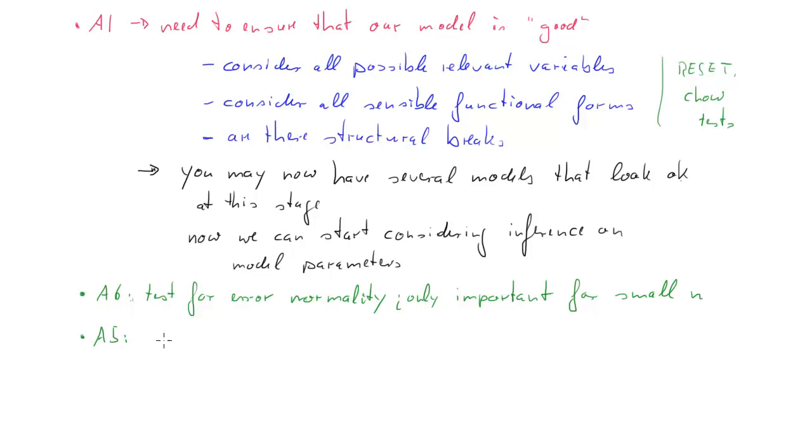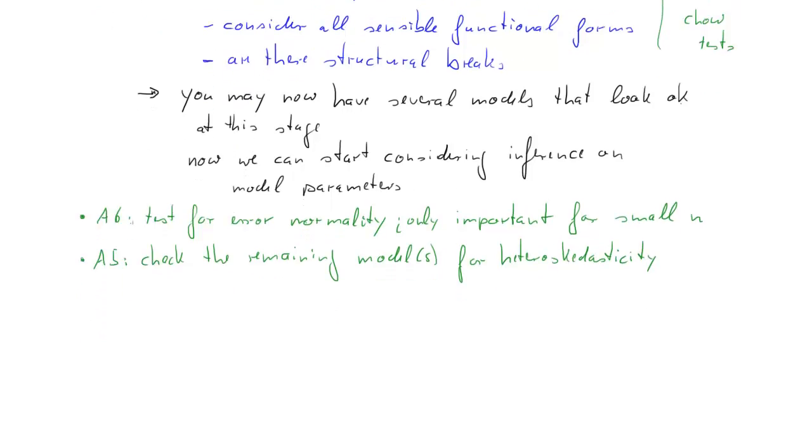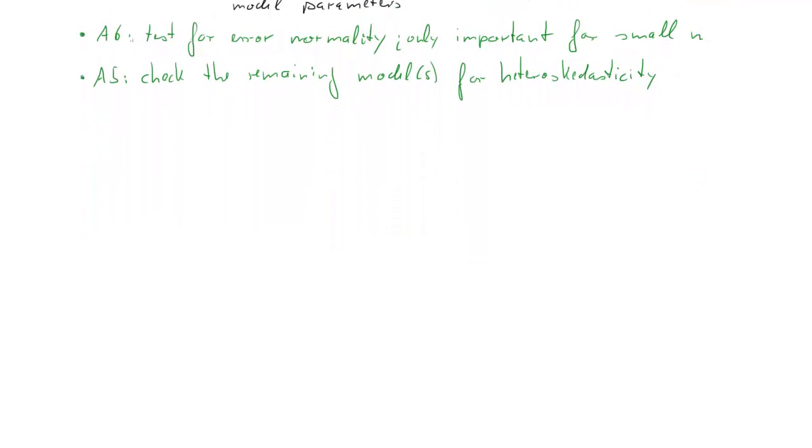Now then, of course, A5—if you want to establish that we don't have heteroscedasticity so that the homoscedasticity assumption holds. So that means whatever models are still left in your bag of possible models should be tested for heteroscedasticity. And of course there's a number of tests, for instance the White test.